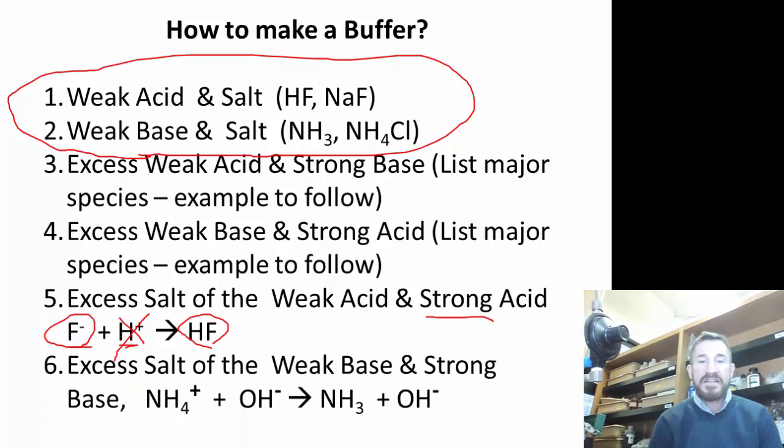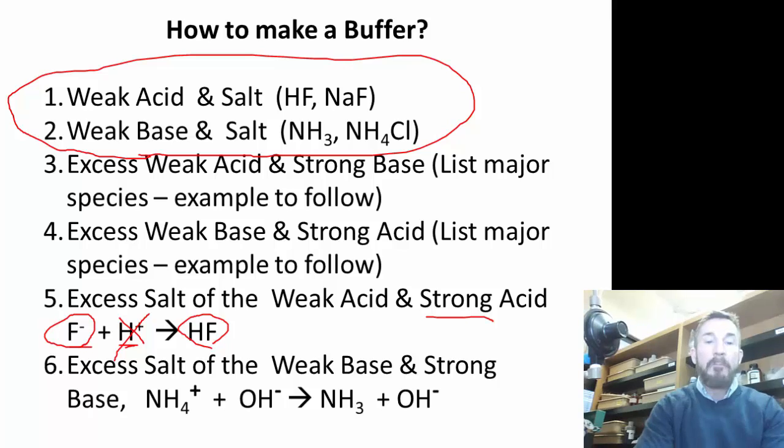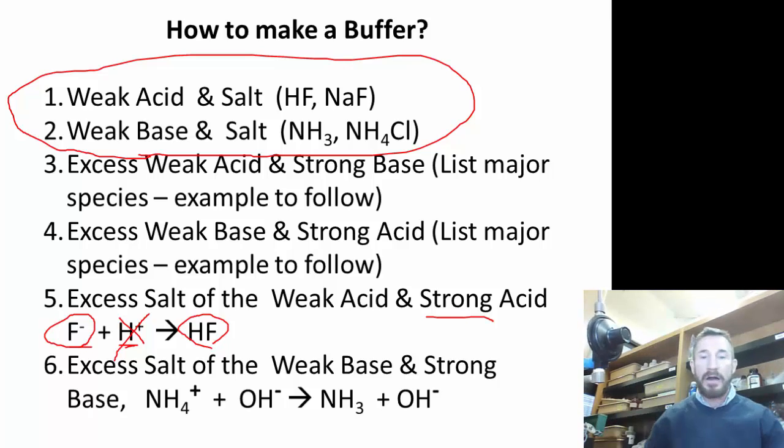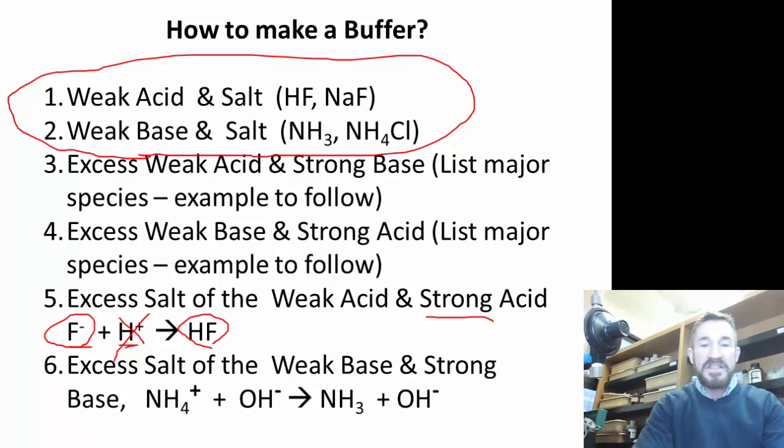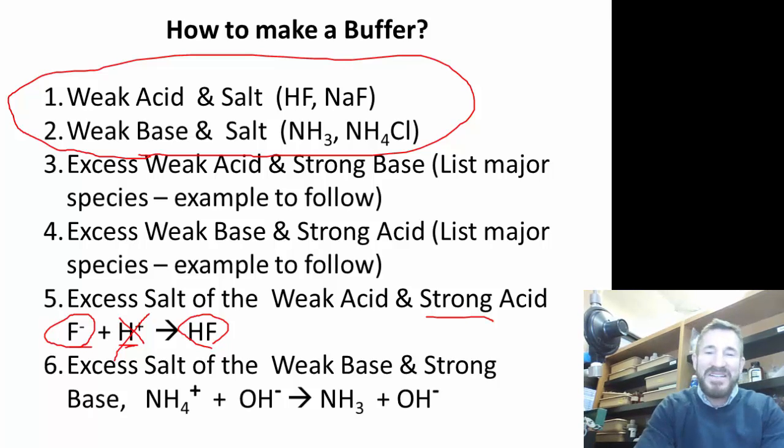Number six, excess salt of the weak base and a strong base. You add something like ammonium chloride. The chloride is a spectator ion floating around, and then you add the strong base - that would be your hydroxide. This hydroxide needs to be limiting.